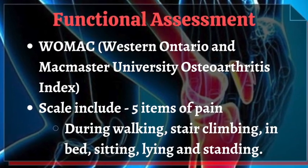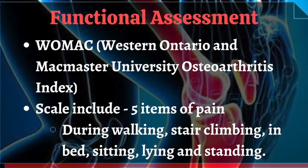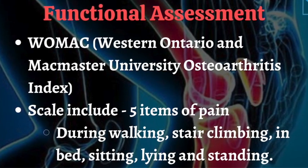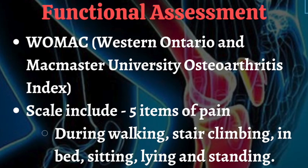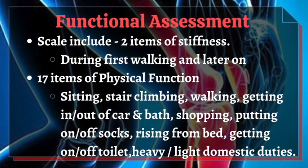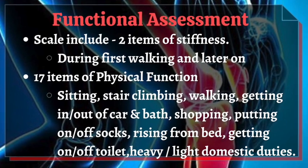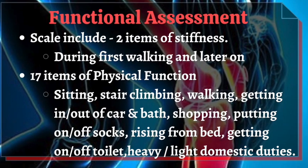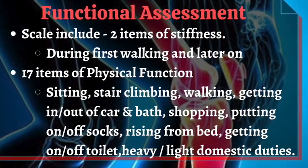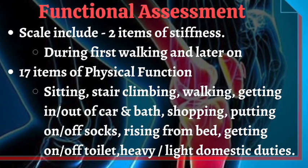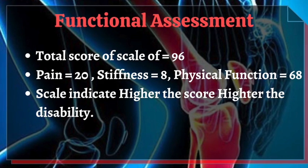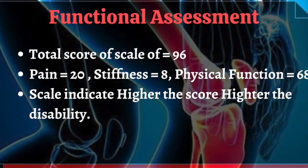One such scale is WOMAC — the Western Ontario and McMaster Universities Osteoarthritis Index. This scale includes five items of pain (walking, stair climbing, in-bed activity, sitting/lying, and standing), two items of stiffness (first walking and later on), and 17 items of physical function including sitting, stair climbing, walking, getting in/out of a car, putting on socks, rising from bed, getting on/off a toilet, and domestic duties. The total score is 96 — 20 for pain, 8 for stiffness, and 68 for physical function. A higher score indicates higher disability.